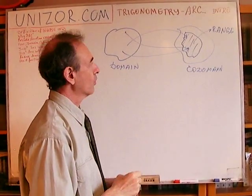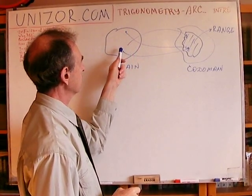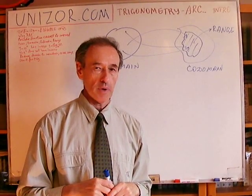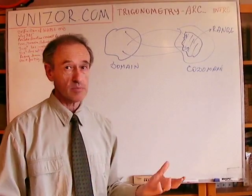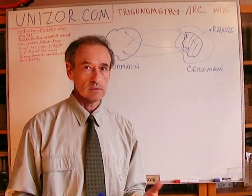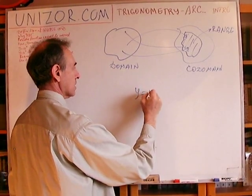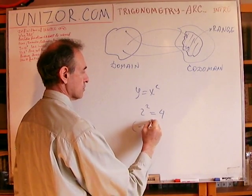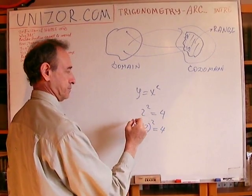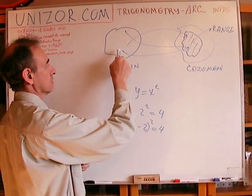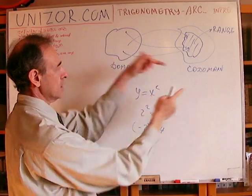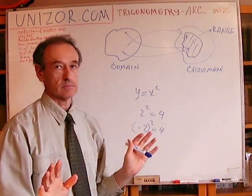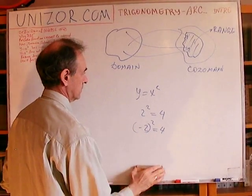It's important to note that it's possible for a function to map two different elements of the domain to the same element in the codomain. For example, with y equals x squared: 2 squared gives 4, and minus 2 squared also gives 4. So 2 and minus 2 both map to 4. Images are the same although the prototypes are different. That's fine — there's no problem with that. These are still valid functions.